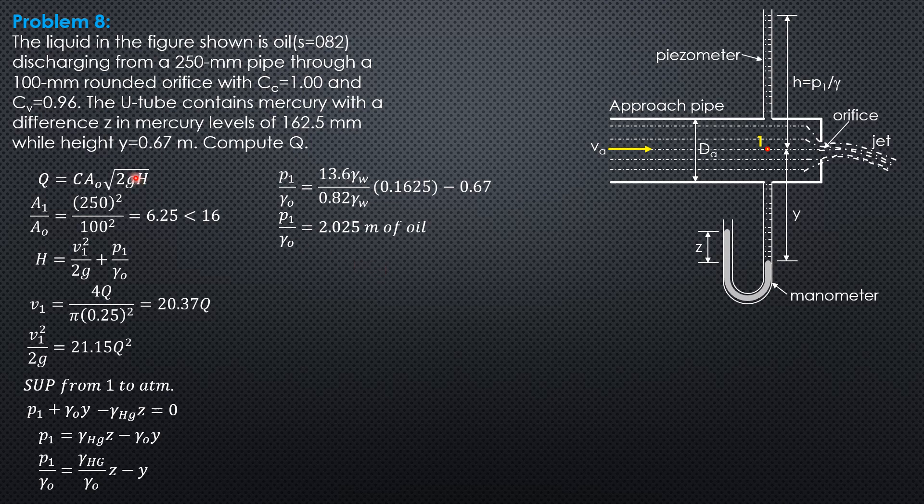We substitute into this formula with h equal to this. So Q equals 1.00 × 0.96 (coefficient of discharge is C_c × C_v) then π × radius of orifice 0.05 meters squared, then square root of 19.62, or 2g, times velocity head at point 1 plus pressure head at point 1.